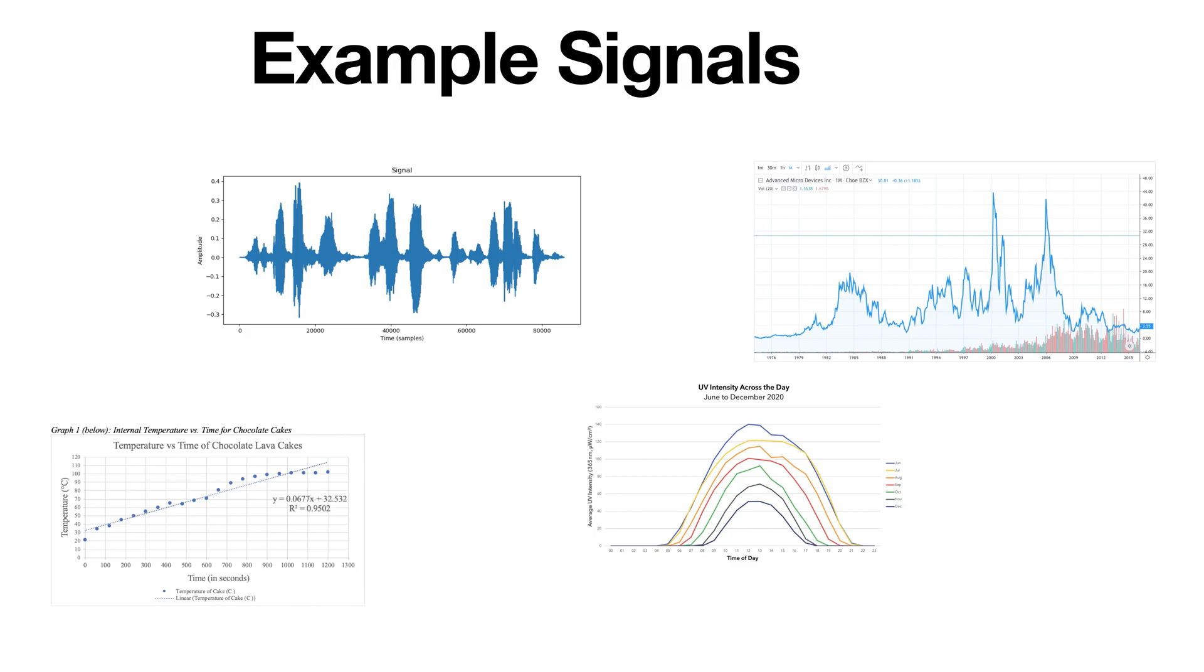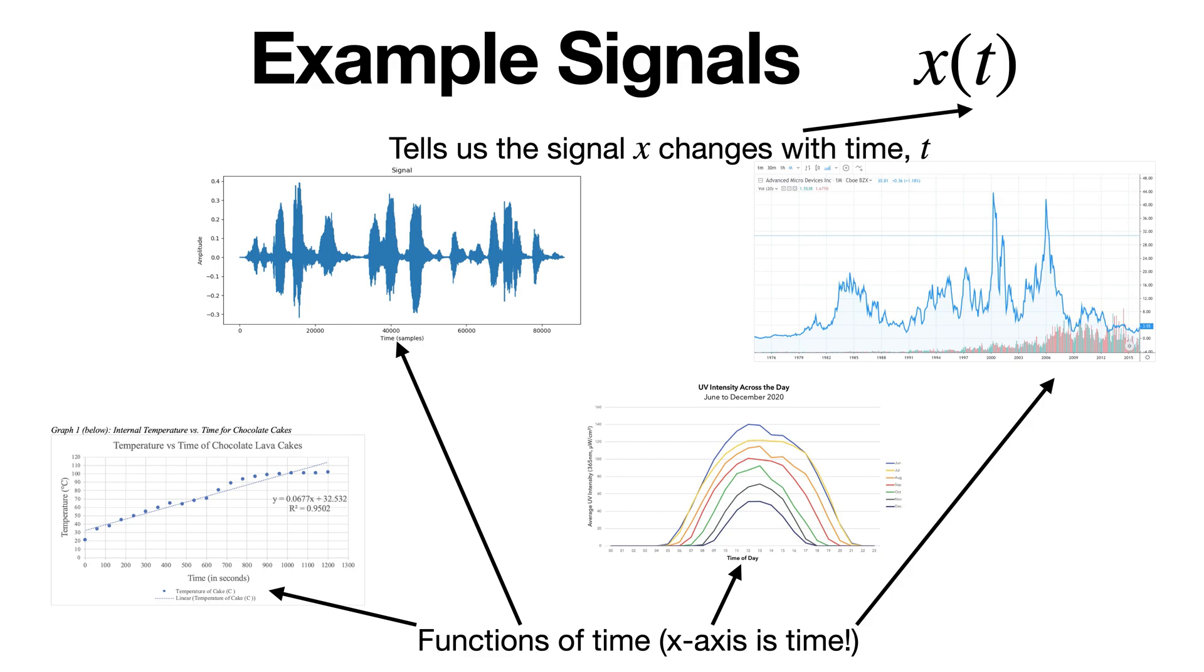In many cases, these signals are functions of a variable that represents time in almost all cases. This allows us to represent things that vary with time, like audio signals, stock prices, temperature, light intensity, and a lot more. When we write a signal, we often put what it depends on in parentheses to tell us it's related to some other quantity or variable. When we write x of t, we're saying that our signal x changes with time or is a function of time.